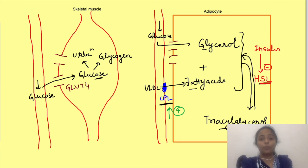Now what about its action on protein metabolism? Insulin also promotes amino acid uptake by cells and promotes protein synthesis simultaneously inhibiting their breakdown.